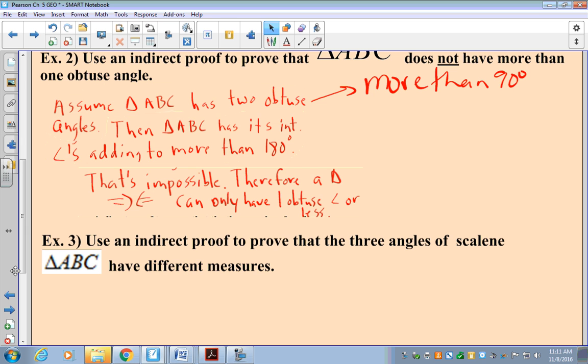Example number three. We're going to use an indirect proof to prove that three angles of a scalene triangle ABC have different measures. So the opposite of three angles having three different measures is we're going to assume that scalene triangle ABC has two angles with the same measure. So step number one, assume the opposite of what you're trying to prove.